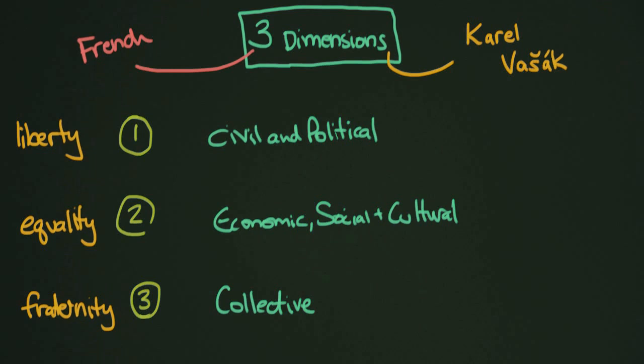So what does each of these mean? Let's take a look at civil and political rights. These are negative rights, and if you remember from the timeline, these are kind of the rights that happen between the Magna Carta and the Universal Declaration of Human Rights.